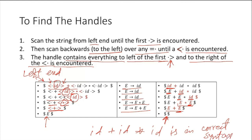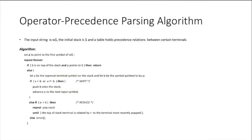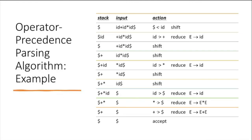The given input string ID+ID*ID is syntactically correct. This is what happens when you use an arithmetic expression to check the syntax of a given arithmetic expression. The operator precedence parsing algorithm example demonstrates the same reduction operations just described.